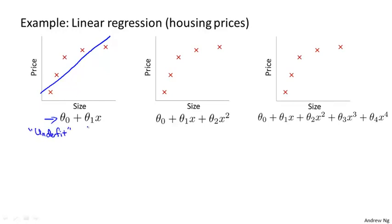And another term for this is that this algorithm has high bias. Both of these roughly mean that it's just not even fitting the training data very well. The term bias is kind of a historical or technical one, but the idea is that if we're fitting a straight line to the data, then it's as if the algorithm has a very strong preconception or a very strong bias that housing prices are going to vary linearly with their size. And despite the data to the contrary, despite the evidence to the contrary, its preconceptions or bias still causes it to fit a straight line, and this ends up being a poor fit to the data.